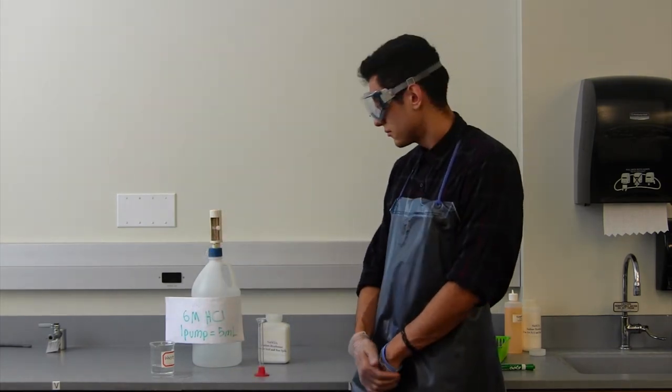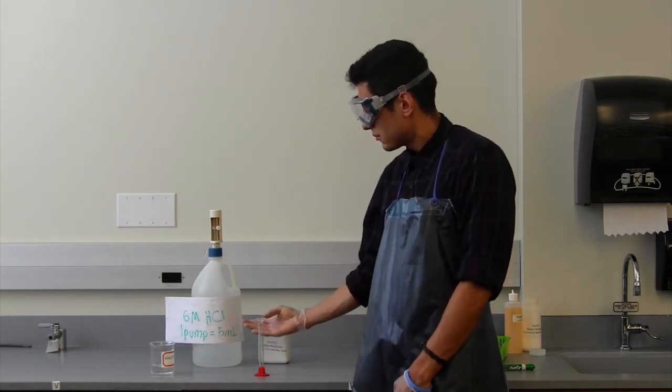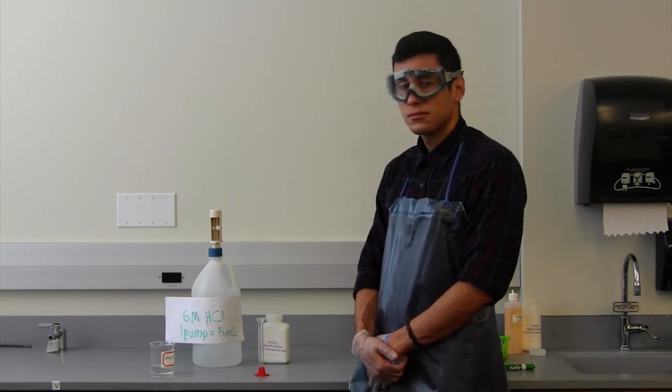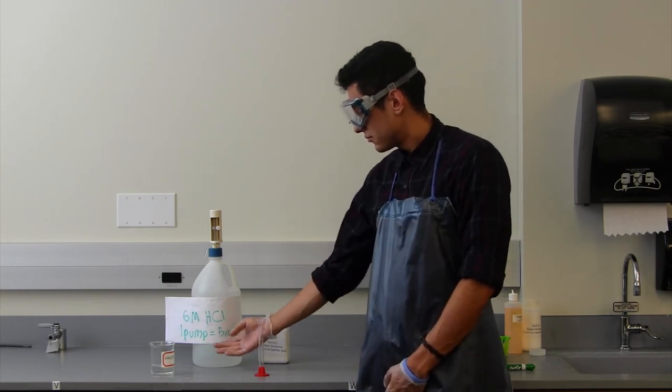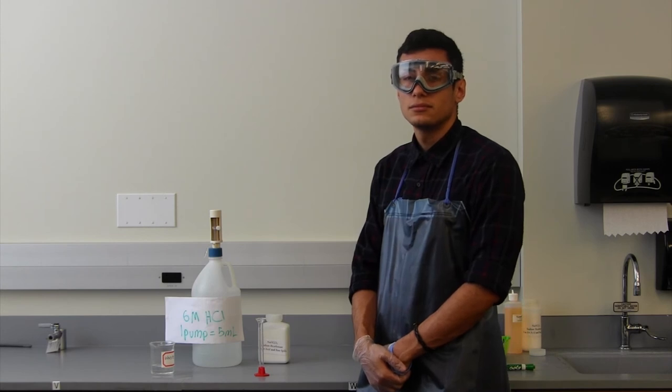The number of pumps will be stated on the reagent pump reservoir, so carefully inspect the reservoir's labels. On this reagent pump, we can see one pump directly specified to dispense 5 milliliters. So perform the pump procedure exactly this many times for correct reagent allocation.